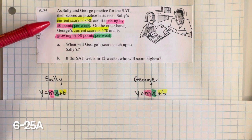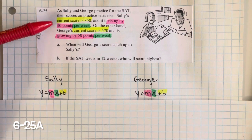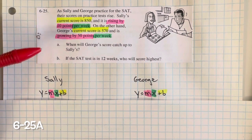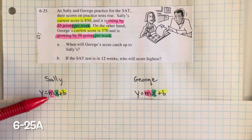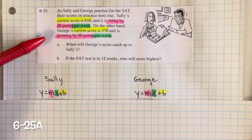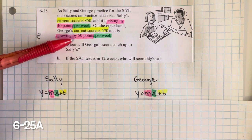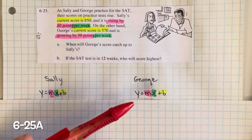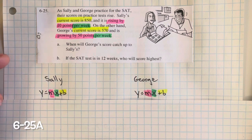Sally's current score is 850, and it is rising by 10 points per week. Since it's rising at a constant rate, we know that it's a linear equation — it can be written in the form y equals mx plus b. George's current score is 570 and is growing by 50 points per week. His is also growing at a constant rate, so it can be written in the form y equals mx plus b. Both of these are linear equations.